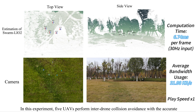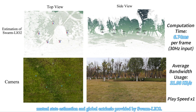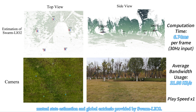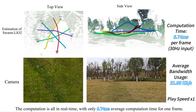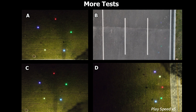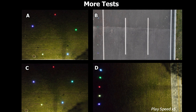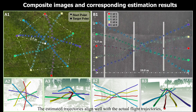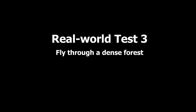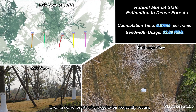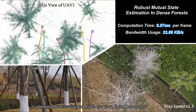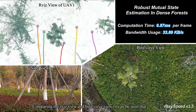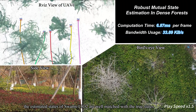In this experiment, five UAVs perform inter-drone collision avoidance with accurate mutual state estimation and global extrinsic provided by Swarm LiO2. The computation is all in real time, with only 6.7 microseconds average computation time per frame. The estimated trajectories align well with the actual flight trajectories, demonstrating accurate state estimation. Even in dense forests where occlusion frequently occurs, Swarm LiO2 can perform robust and accurate ego and mutual state estimation. Comparing the aerial view and bird's eye view, the estimated states are well matched with the true states.